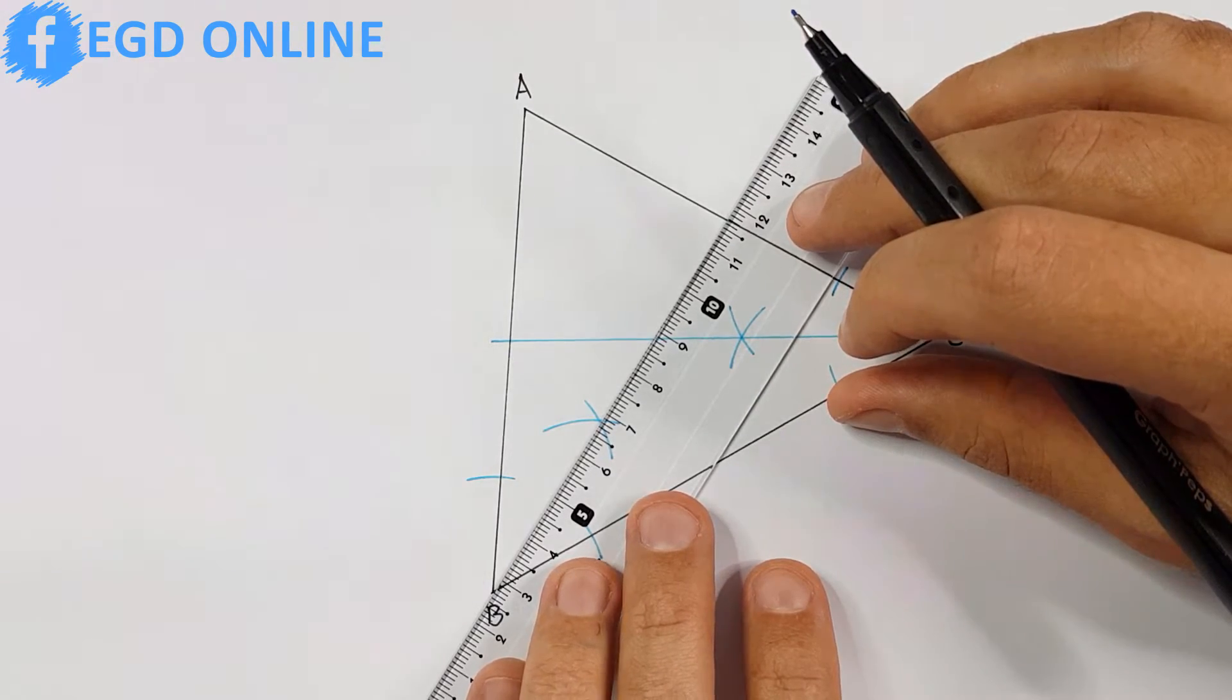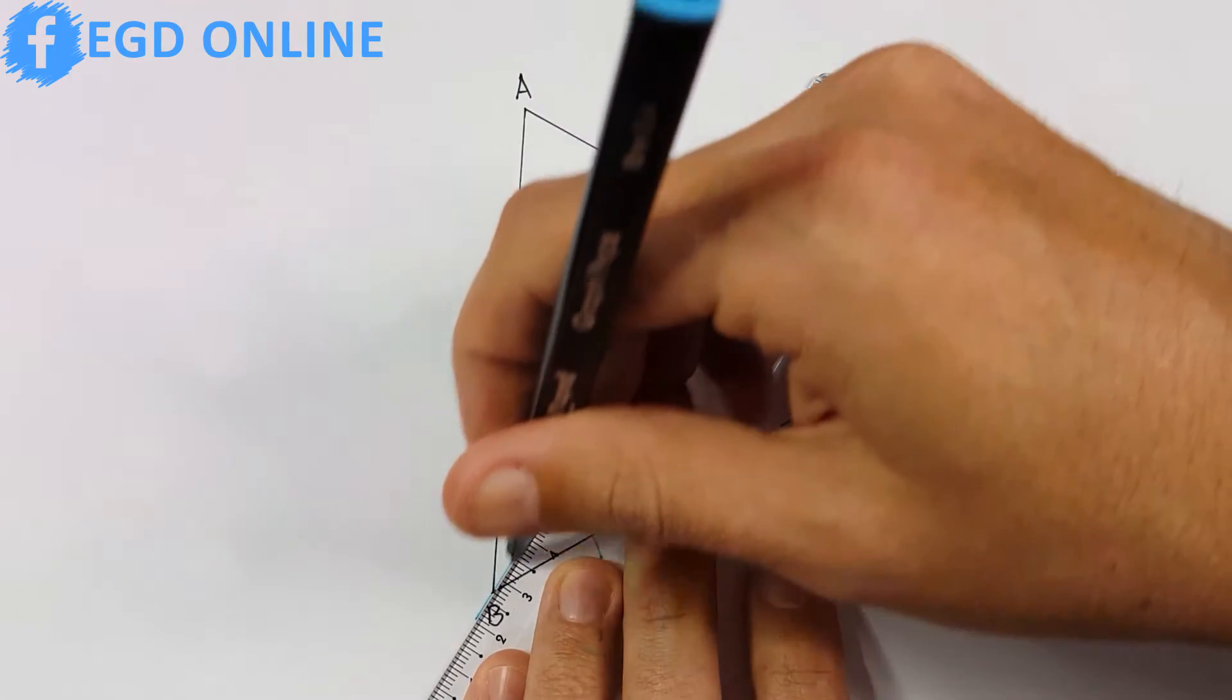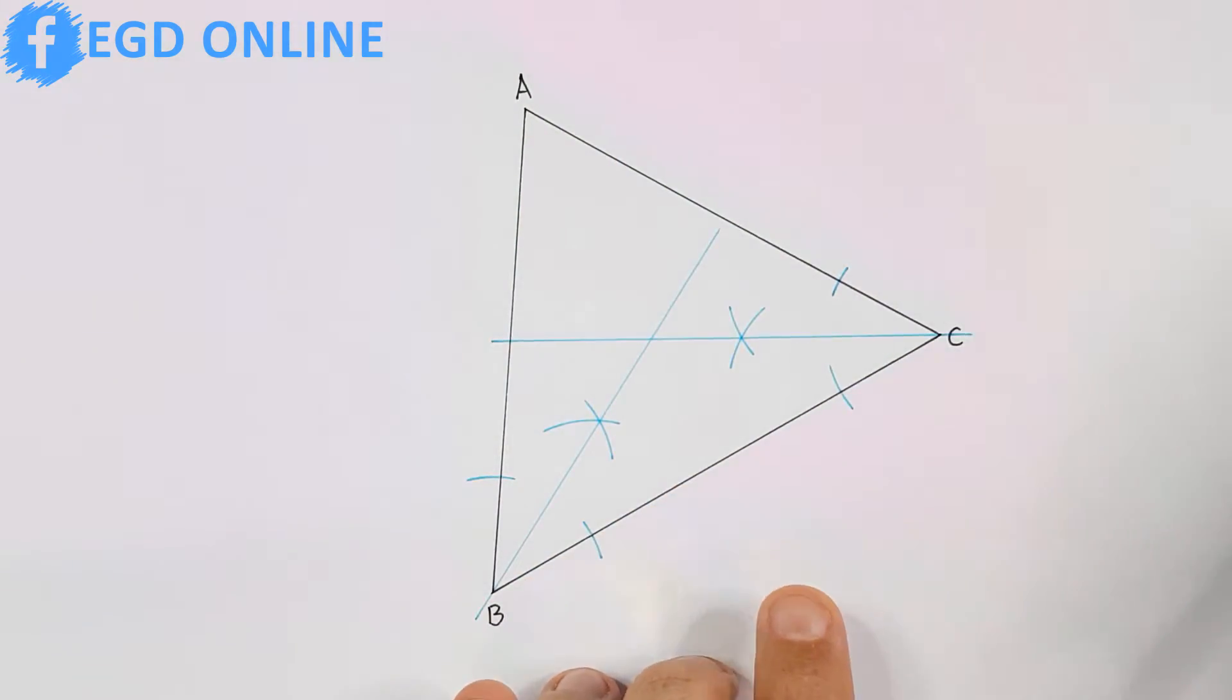After successfully bisecting two of our angles, the center point will be determined where the two bisectors intersect each other.